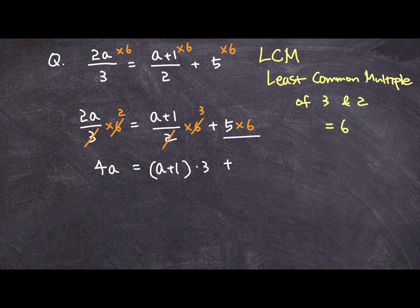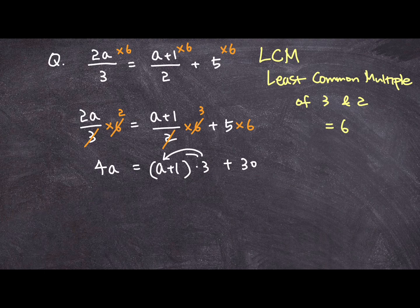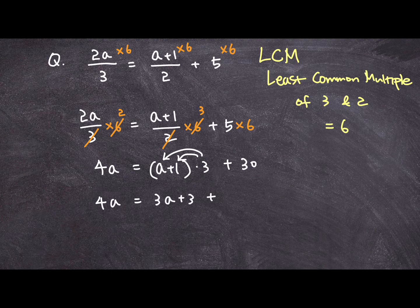And for this integer variable, I have 30. So let's distribute this 3 to both variables in the parenthesis. I get 3a plus 3 plus 30.